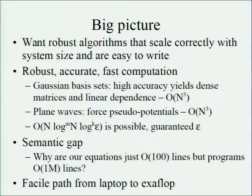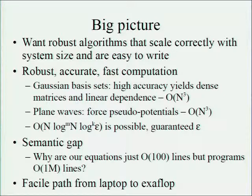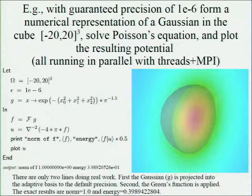Numerically, Madness is pursuing fast algorithms that scale correctly and are numerically robust, because a fast algorithm that is inaccurate is useless. Our goal was to replace the basis sets — that anyone who has interacted with electronic structure people will know about — with other basis sets that give much higher accuracy with reduced scaling. And we want to address the issue: why are our programs so large, when the equations that underlie all of this are so short?